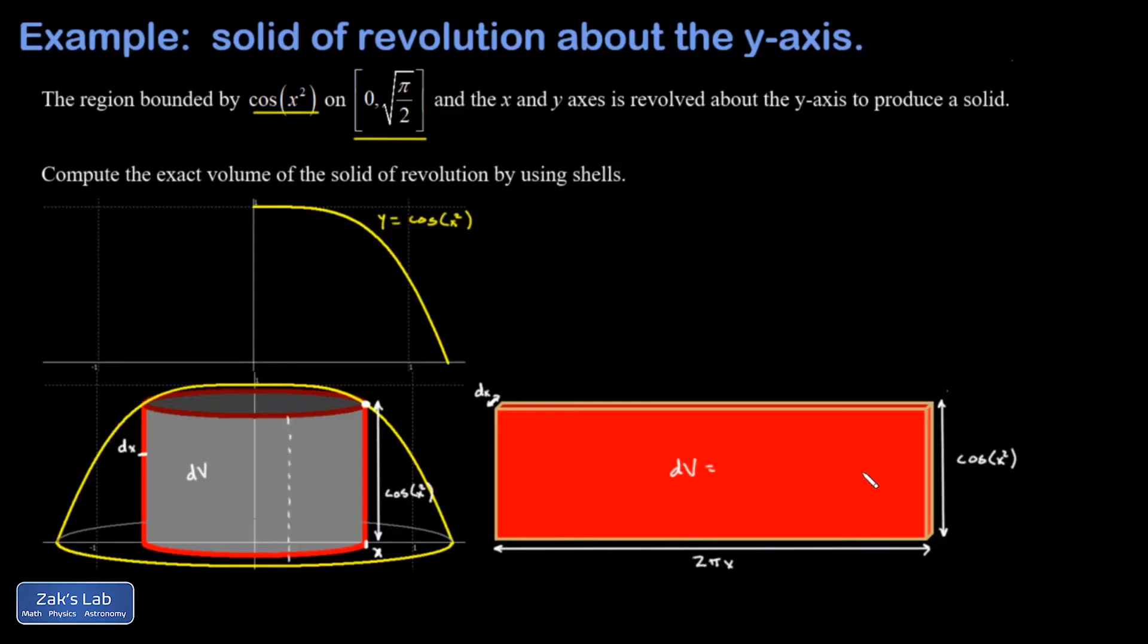So finding the volume of a rectangular solid is easy enough, I just multiply those three dimensions and I have 2 pi x cosine of x squared dx.